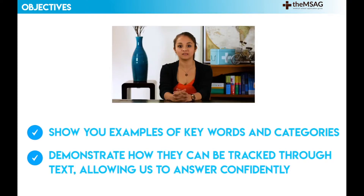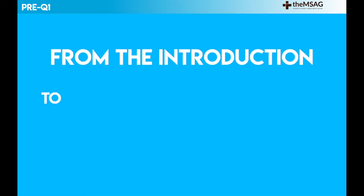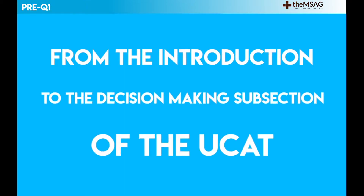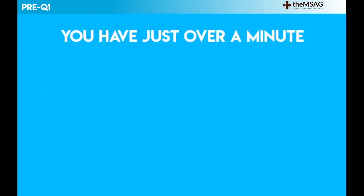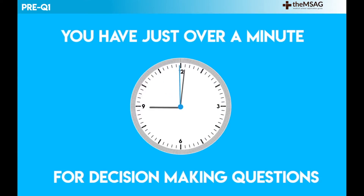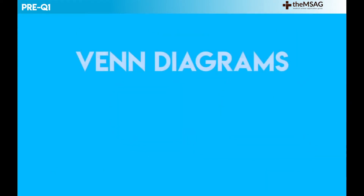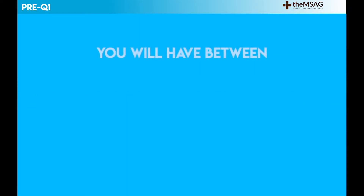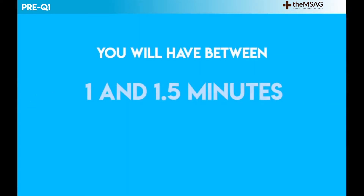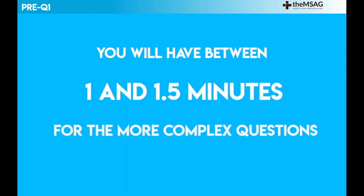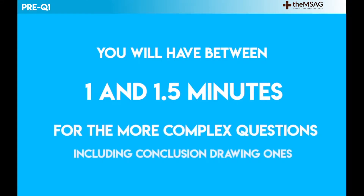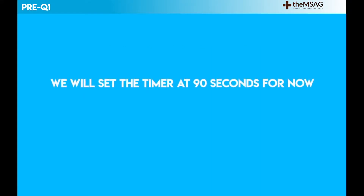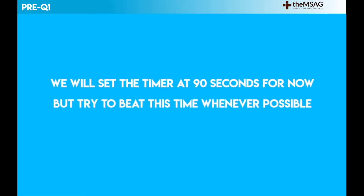As you may recall from the introduction to the decision making subsection of UCAT, you have just over a minute for decision making questions. However, Venn diagrams and basic probability questions should take you a lot less time, so you will have between one and one and a half minutes for more complex questions, including conclusion drawing ones. We will set the timer at 90 seconds for now, but try to beat this time wherever possible.